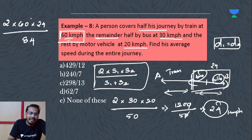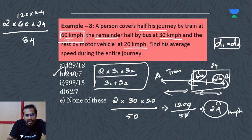So we get 120 times 24 divided by 84. After canceling, we get 240 divided by 7. This is the easiest way for getting the answer for this kind of question.